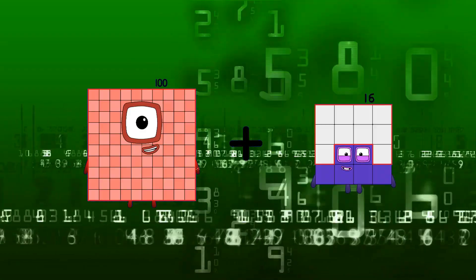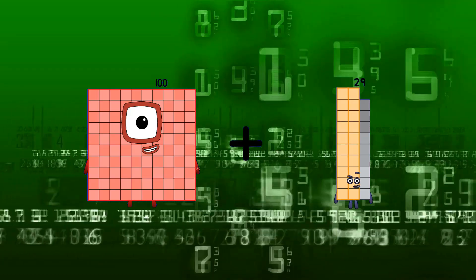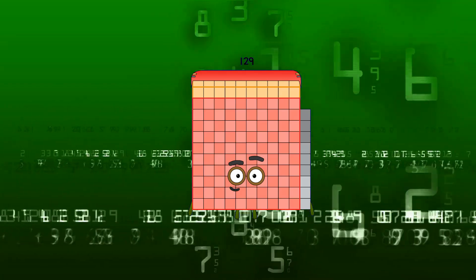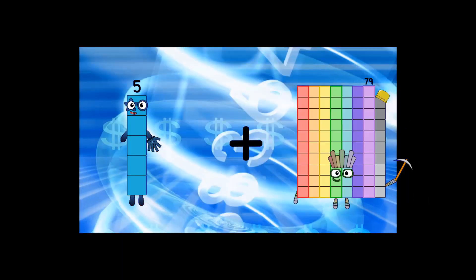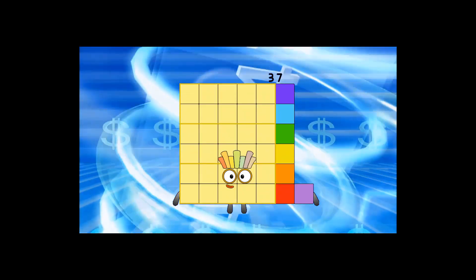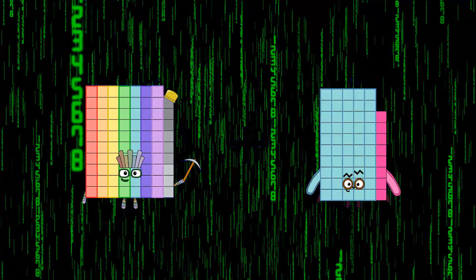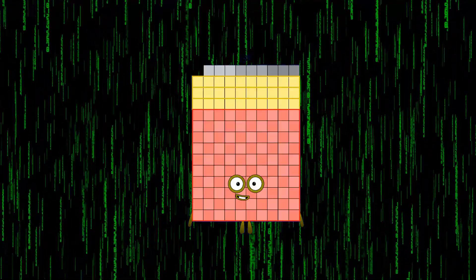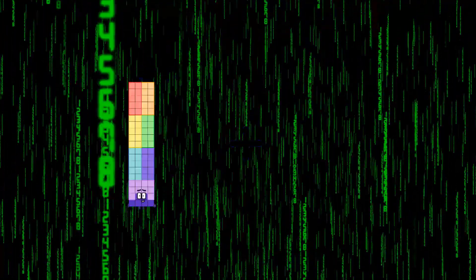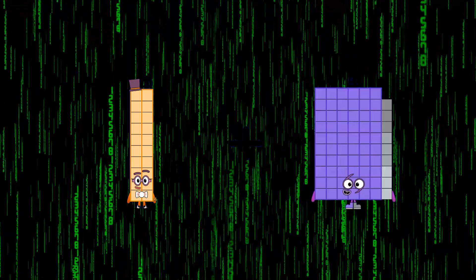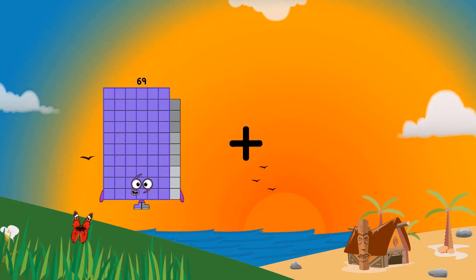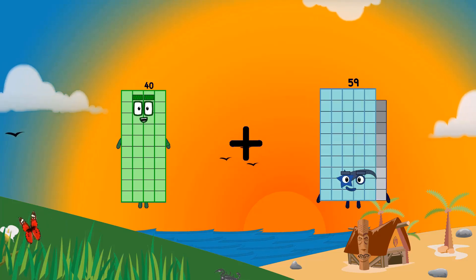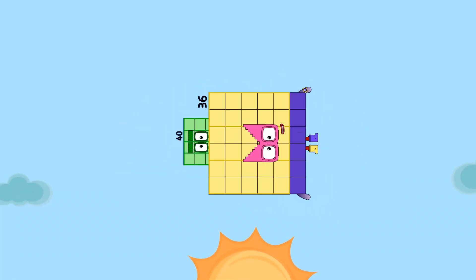100 plus 29 equals 129. 5 plus 32 equals 37. 79 plus 60 equals 139. 20 plus 32 equals 52. 40 plus 36 equals 76.